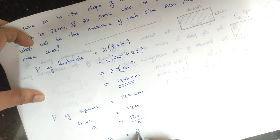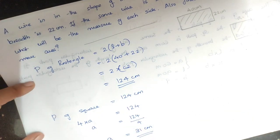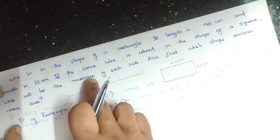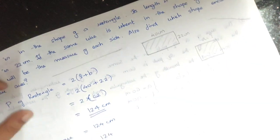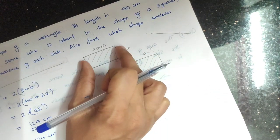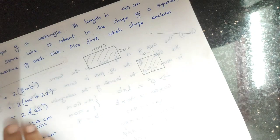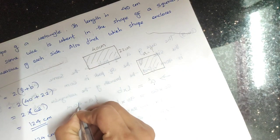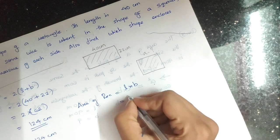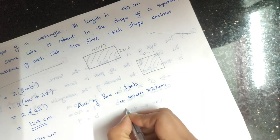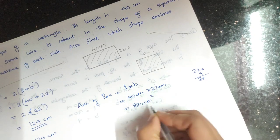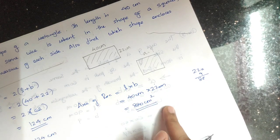A equals 31 cm. So one side of the square is 31 cm. Now to find which shape encloses more area: area of the rectangle equals length into breadth equals 40 into 22 equals 880 cm².